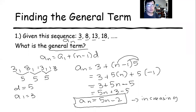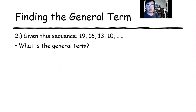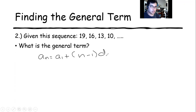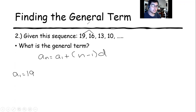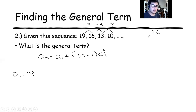We're going to move to the next example. What is the general term? We're going to do the same process. Our first term is 19. To get the common difference, we have to find the difference. 19 minus 16 is 3, 16 minus 13 is 3, and 13 minus 10 is 3. Since the terms are decreasing, we write a negative sign. Because 16 minus 19 is negative 3, and 13 minus 16 is also negative 3, so our common difference is negative 3.